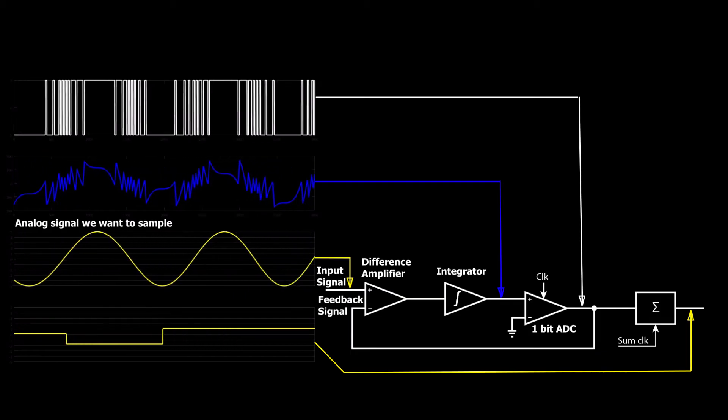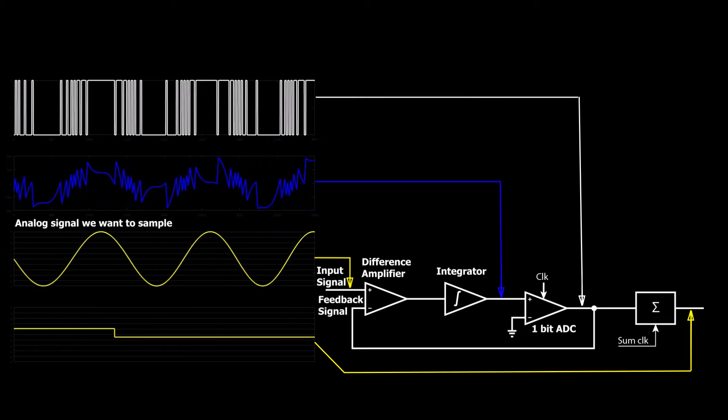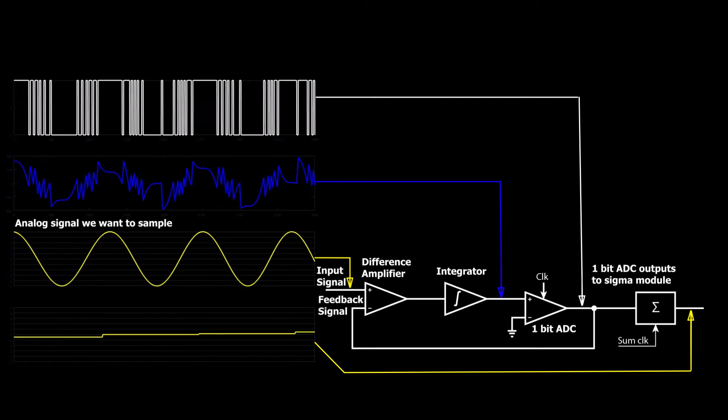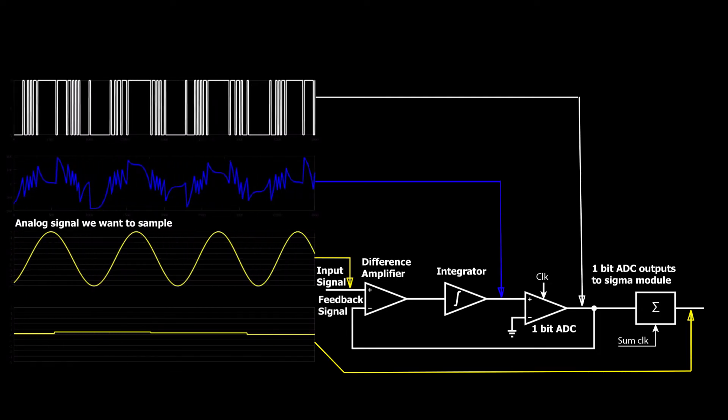Cool! Now this 1-bit ADC that we developed will close the loop in the delta sigma converter. And this ADC signal is also the output signal, but let's just first admire this feedback loop working because it's just so satisfying, isn't it?